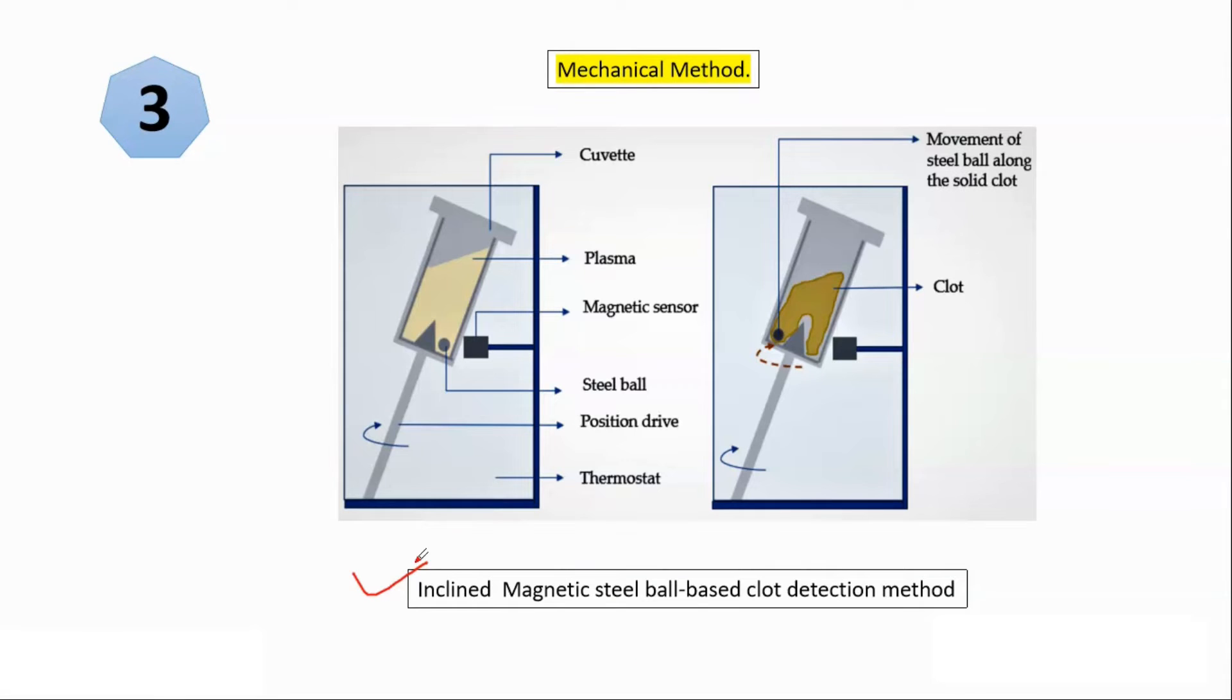So now move forward to other methods which are mechanical. So this is called inclined magnetic steel ball based clot detection method. It is most simplest one. Like here, this thing is rotating. This thing shows that whole instrument is rotating, whole cuvette holder or cuvette is rotating, but here steel ball is basically attracted to magnetic sensor.